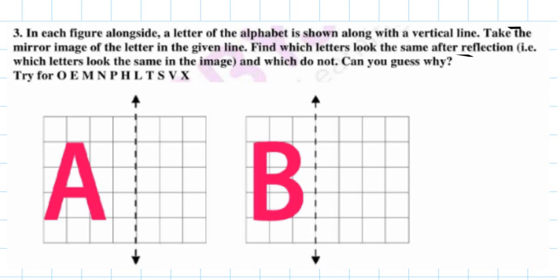Now you can see it is asking us to try for other letters such as O, E, M, N, P, H, L, T, S, V, and X. For these letters, we have to give their reflection image, and when we give the reflection image, we have to tell which look the same in the reflection image and why, and also for A and B.